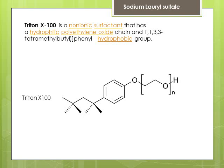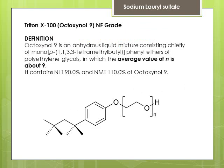It has a hydrophobic component which is a tetramethylbutyl phenyl group, and it has a hydrophilic component which is a polyethylene oxide chain. This excipient is a mixture of different molecules, and the difference between these molecules is the polyethylene oxide chain length. In the case of Triton X100, the average length of the polyethylene oxide is nine monomers.